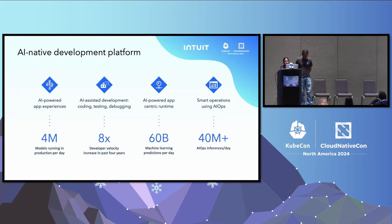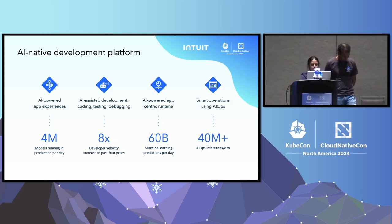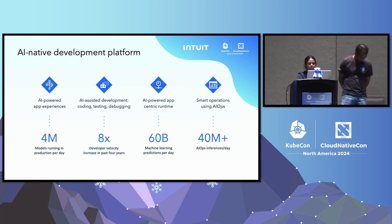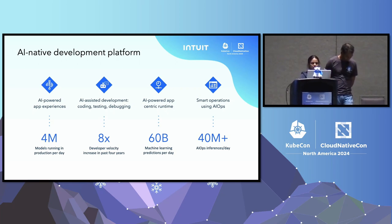Our AI-native development platform is massive in scale, supporting over 4 million models running in production every other day. It has helped 8x developer velocity over the past four years and powers 60 billion machine learning predictions and 40 million AIOps inferences per day.